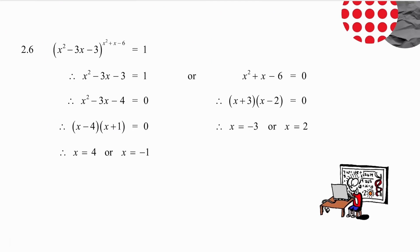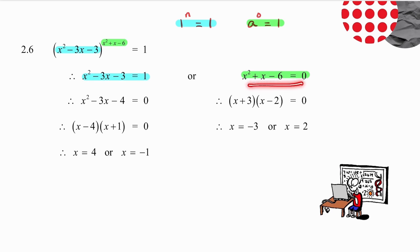2.6 is a lovely example. You've got something to the power of something equals 1. How can you get 1 as an answer? Well, 1 to any power is 1, so the base could equal 1. Also, anything to the power 0 is 1 (except 0 to the 0), so the exponent could also be 0. Set up both quadratics — factorize the first and get two answers, factorize the second and get two more answers. Really a nice example.